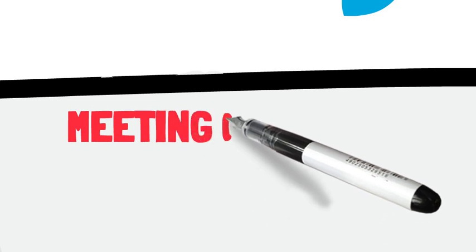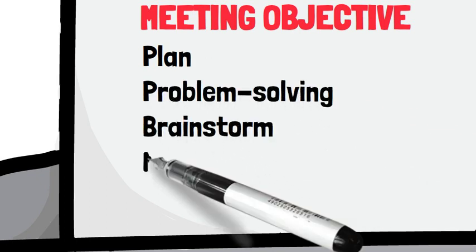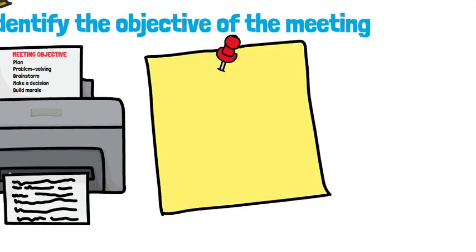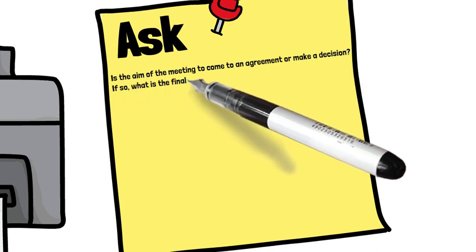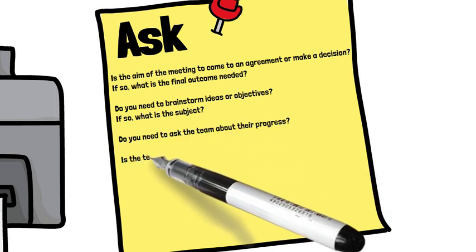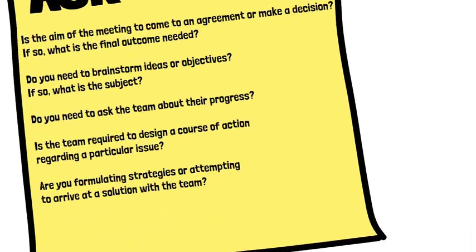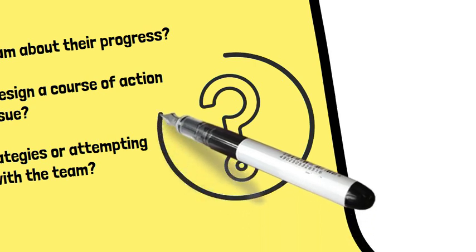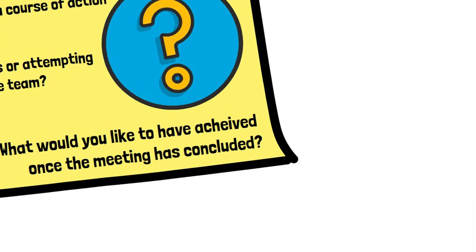Prior to establishing the objective, first determine what kind of meeting is taking place — whether to plan, solve a problem, brainstorm, make a decision or build team morale. Then refine the purpose further by asking yourself: Is the aim to come to an agreement or make a decision? Do you need to brainstorm ideas? Do you need to ask the team about their progress? Is the team required to design a course of action regarding a particular issue? Are you formulating strategies or attempting to arrive at a solution? After answering these questions, write the objective for the meeting and include it at the start of the agenda and in the meeting invitation.